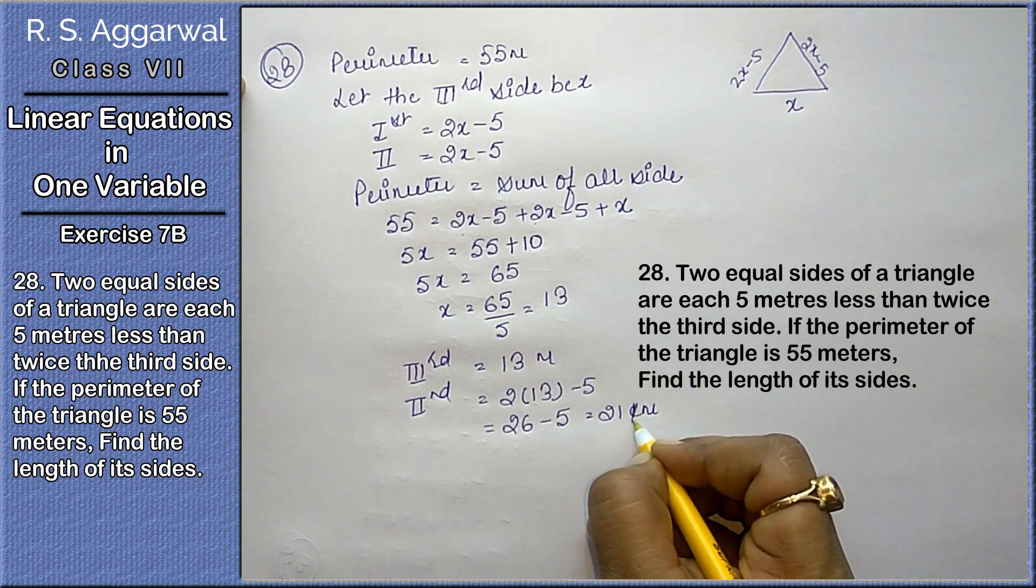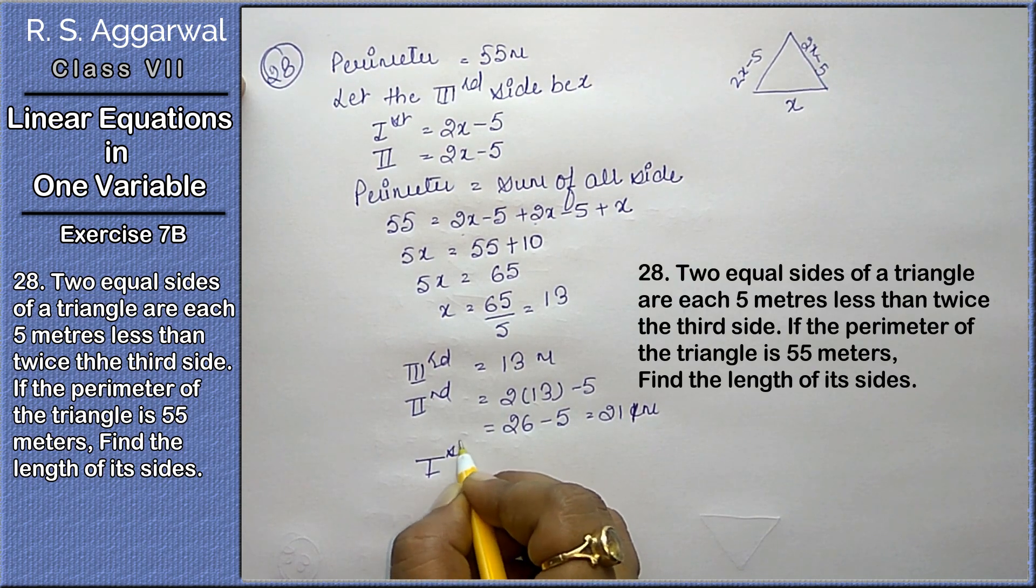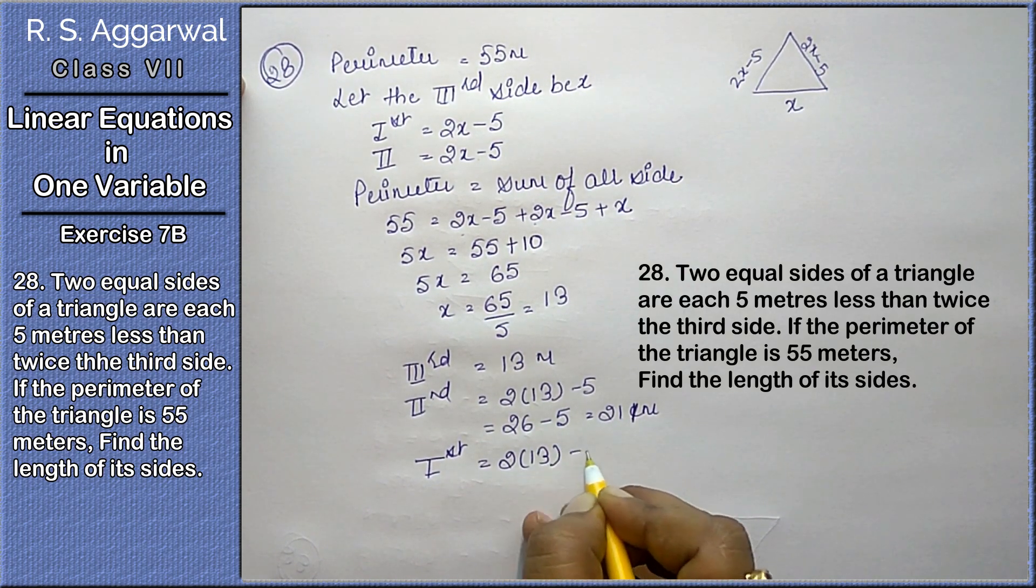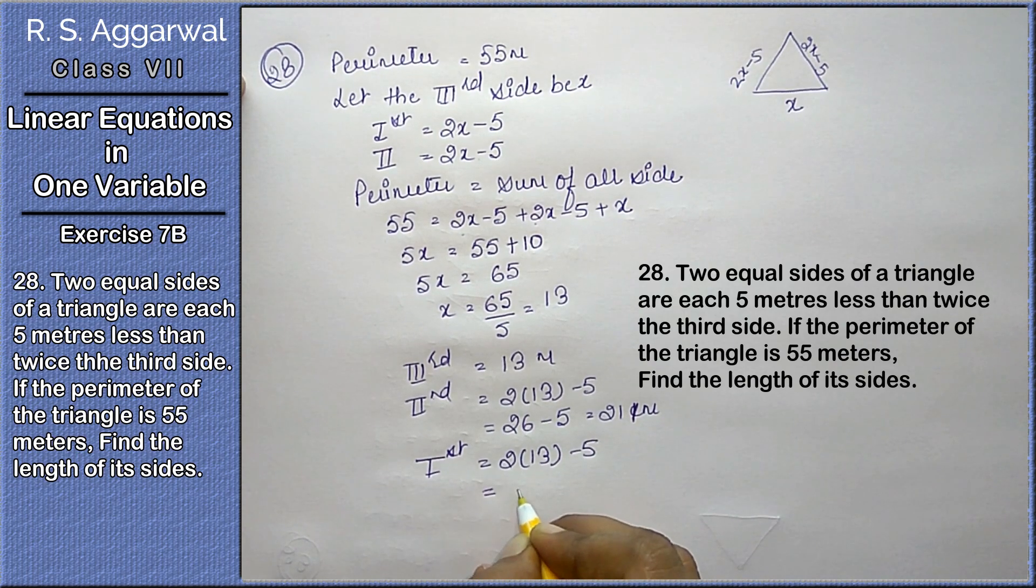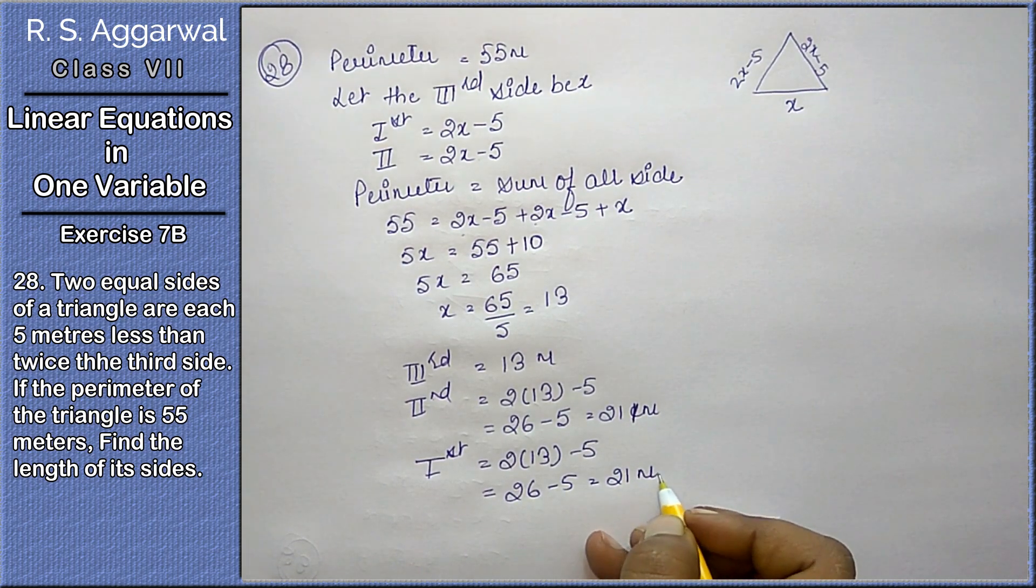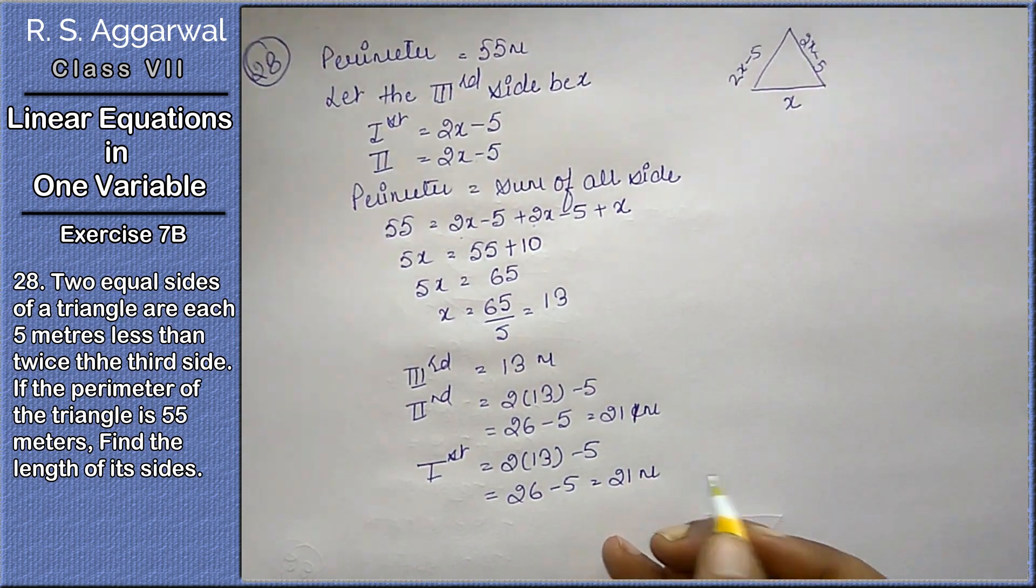Sorry, meter friends, not centimeter. First side will be same like second side, 26 minus 5 equals to 21 meters. Let's do the next question.